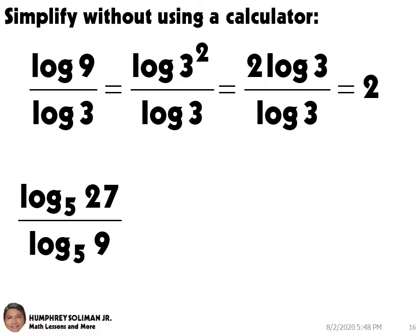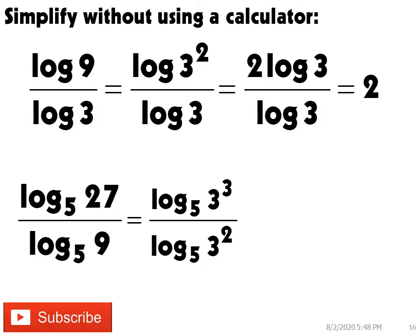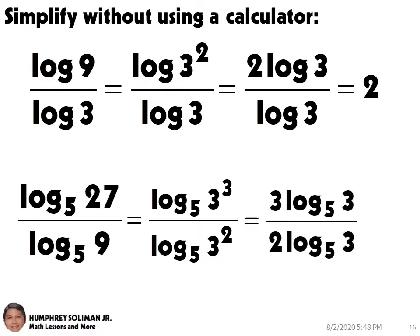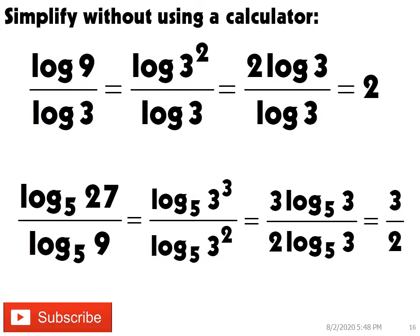Next, log base 5 of 27, over log base 5 of 9. This is equal to log base 5 of 3 cubed, over log base 5 of 3 squared. Then, we can put the exponent of 3 in front of the logarithms, and then cancel out the log base 5 of 3 in the numerator and the denominator. So this is equal to 3 over 2.